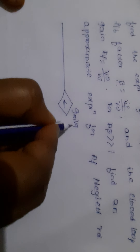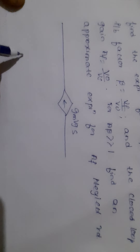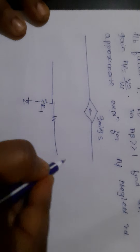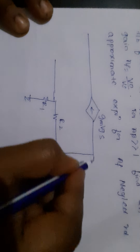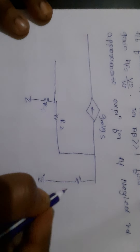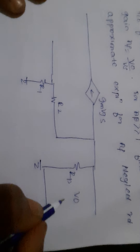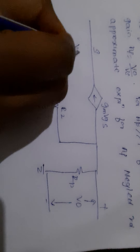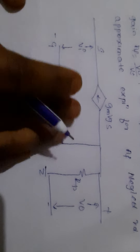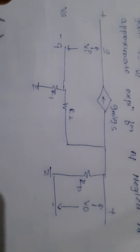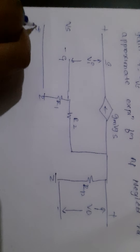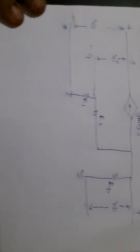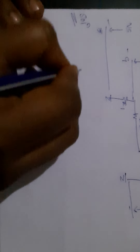The circuit contains a dependent current source gm·Vgs, resistors r1 and r2, and from here rd we get the output voltage V_naught. The input Vs is applied at the gate. This is the circuit diagram they have given.